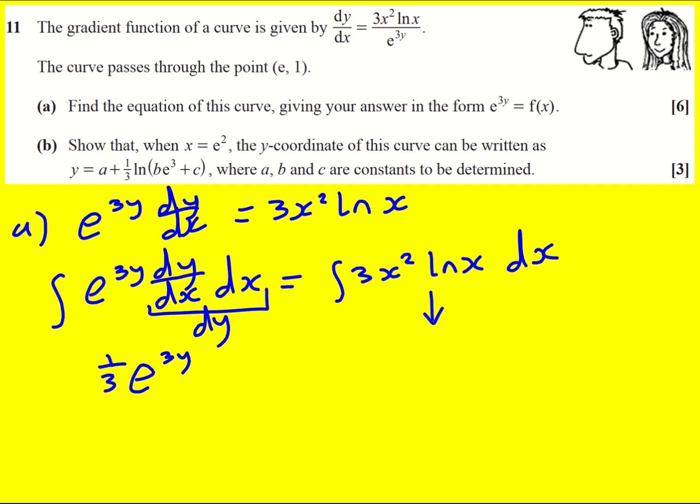And this right hand side is a product of functions, so I'm going to use integration by parts. Now often when you have an x that's the thing that you let equal u, but as soon as you get a ln x in there that becomes your u and then this is actually going to be v dash. The reason being it's much harder to integrate ln x than differentiate it. Differentiating we just get 1 over x and that's going to partially cancel out with v which is x cubed.